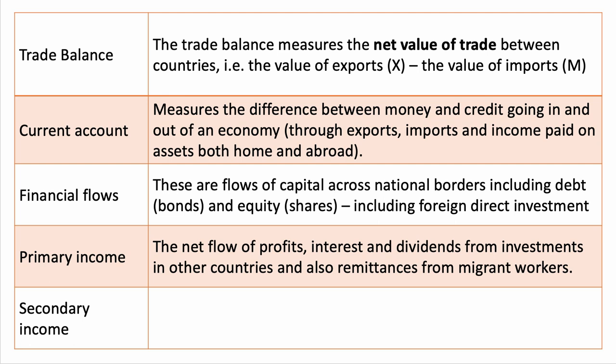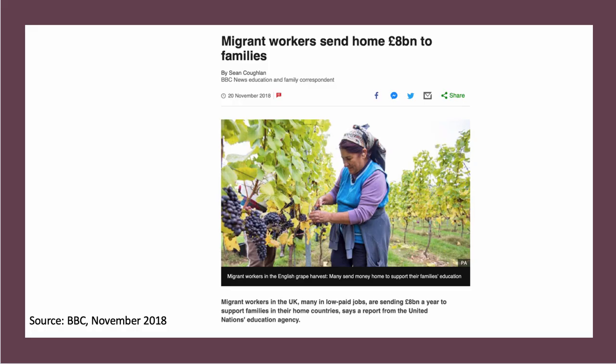In 2018, globally, there were an estimated 258 million international migrants — people residing in a country other than their country of birth — that's just under 3.5% of the world's population. For the UK, there is quite a net outflow of remittances, particularly from workers who have come from the European Union and countries such as India and the Philippines. A BBC news article notes that migrant families sent over £8 billion to support families in their home countries, according to the latest UN data. The balance of payments measures the value of these remittances, though remittances can also be of a social nature that we can't necessarily measure tangibly.